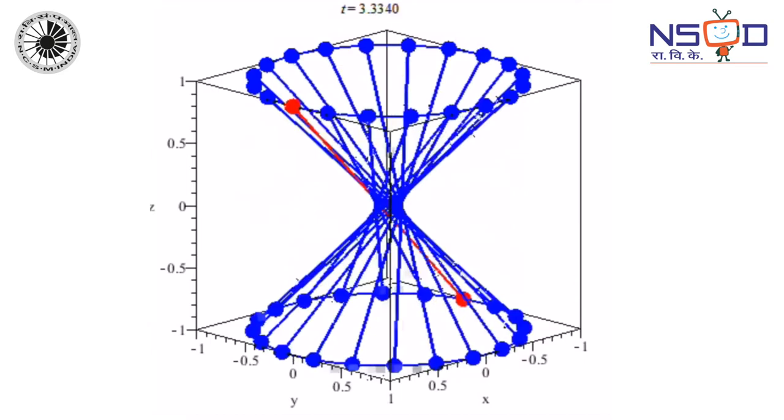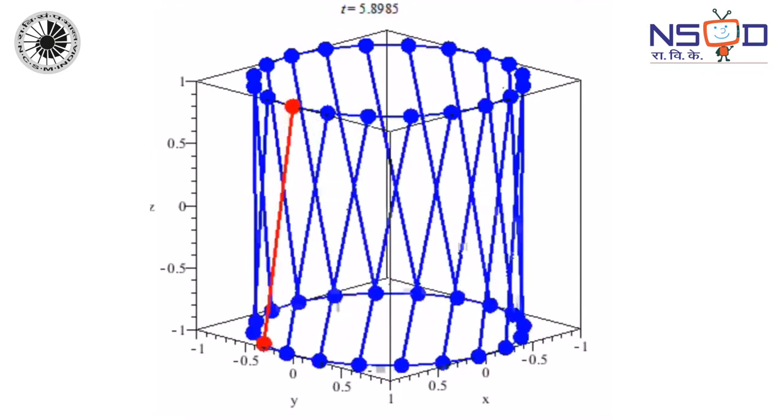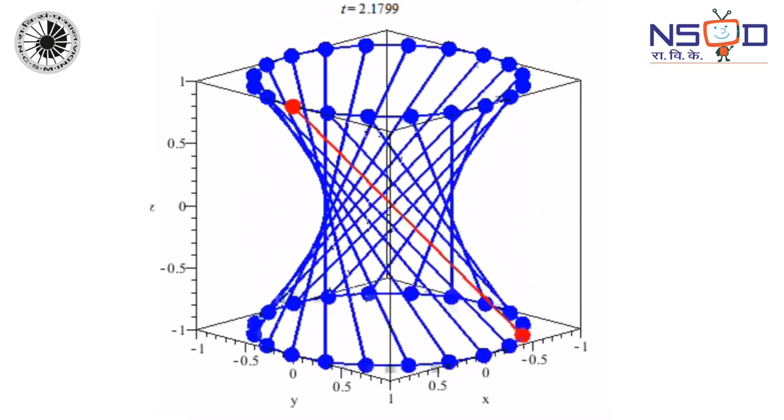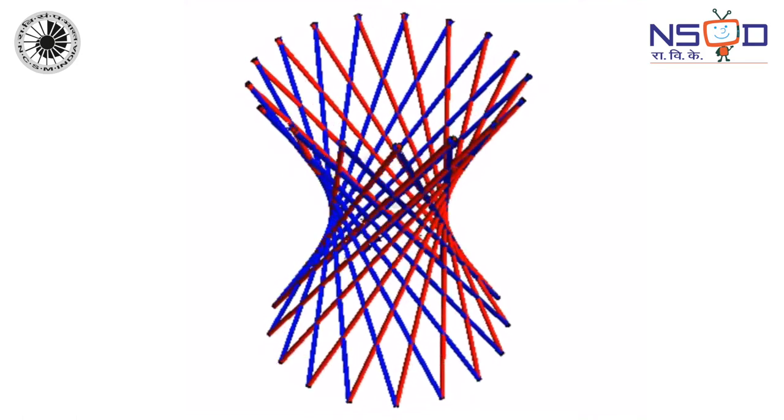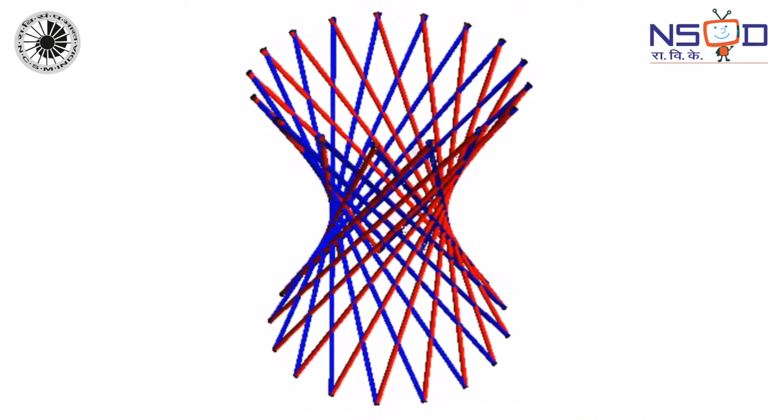Now extend your imagination a bit and try to visualize the imaginary shape formed by the rod as it moves. Just because the rod is straight, doesn't mean this shape can't have curves.